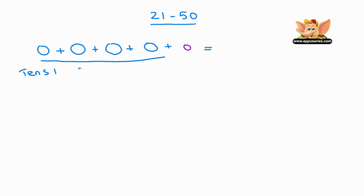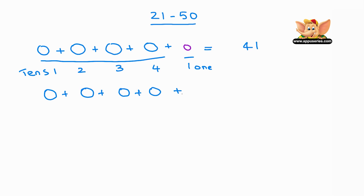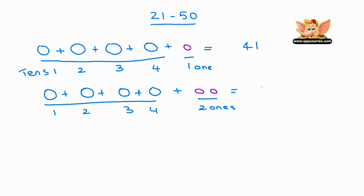One, two, three, four — four 10s plus one 1 equals 41. Now let's go on to the next one. Four circles plus two more grapes: one, two, three, four circles plus two 1s equals 42.